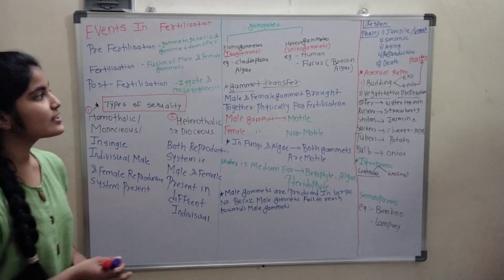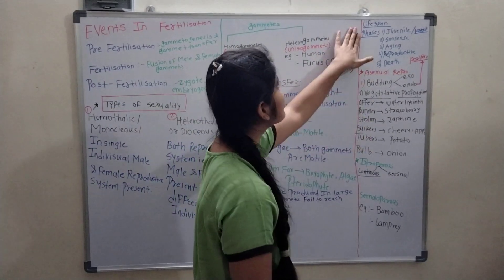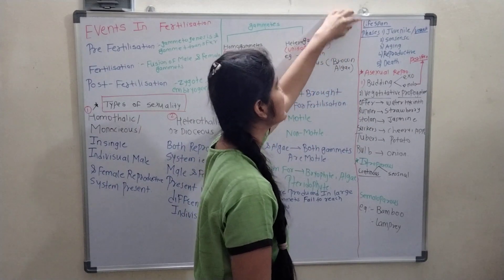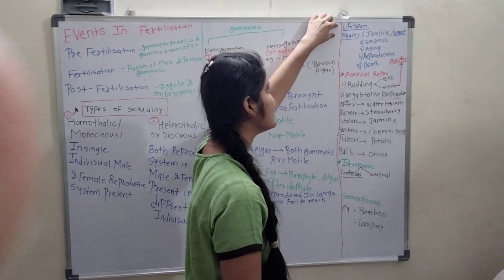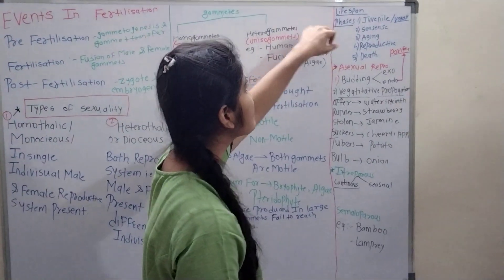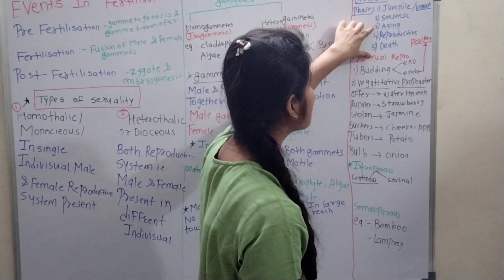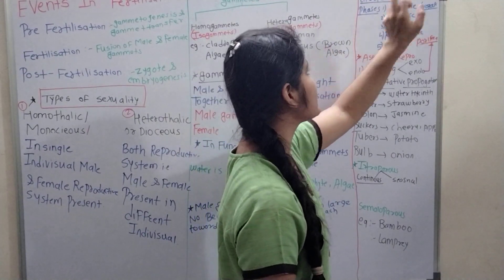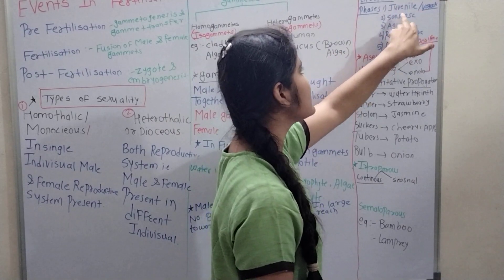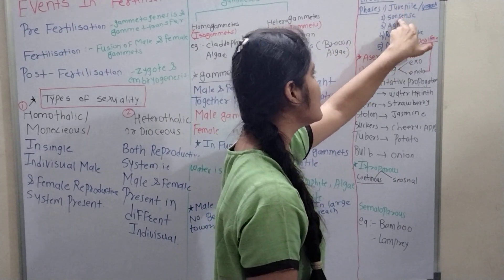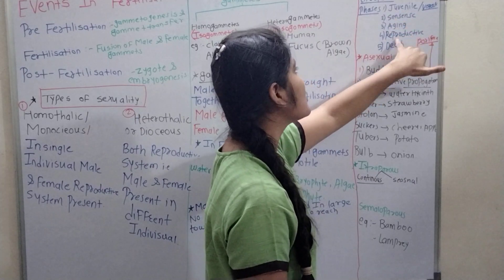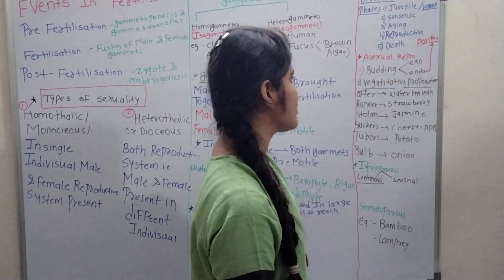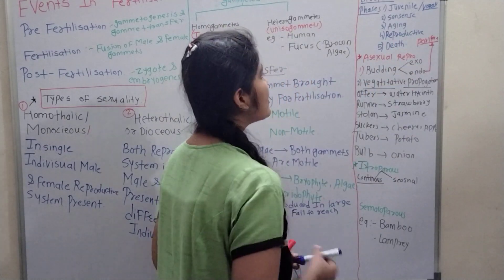First we will revise what we saw in two lectures. In the first lecture we have seen Lifespan - born to natural death. Then phases: juvenile phase, senescent phase, aging, reproductive phase and death. Juvenile phase means development is taking place. Senescent phase is where reproductive characters are lost. Aging means degeneration. Reproductive phase is where the gonads mature and death means complete cessation of life. Then in asexual reproduction.